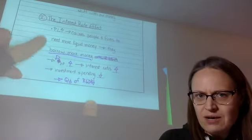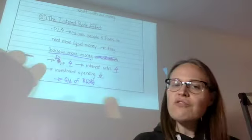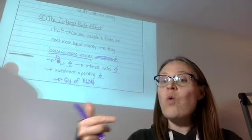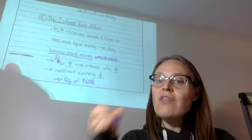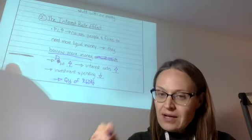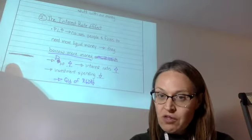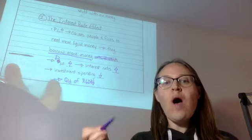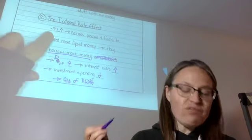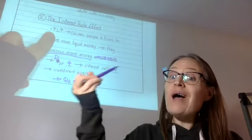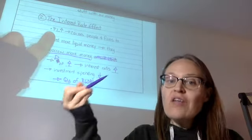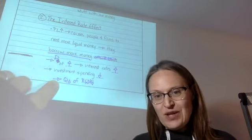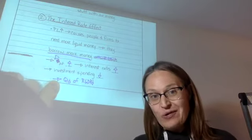Maybe people are taking out more loans, but businesses are not. So therefore the quantity demanded of real GDP goes down. The interest rate effect is one of the reasons why the aggregate demand curve is downward sloping — one of the reasons why if the price level goes up, the quantity demanded of real GDP will go down.